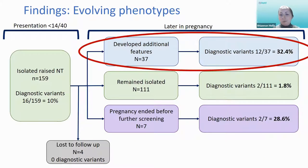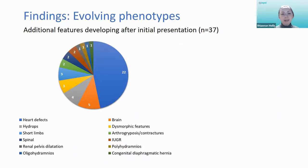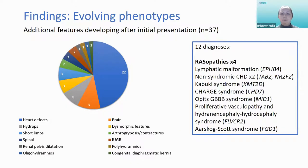Looking at what types of abnormalities developed in the cases where additional features emerged later in pregnancy: cardiac abnormalities were by far the commonest type of additional abnormality to develop, which makes sense given the known association between increased NT and cardiac defects. That was followed by brain abnormalities and hydrops. In terms of diagnoses, the commonest category were rasopathies, which accounted for one third of the diagnoses made in this group. The rest were a mixture of various other syndromic conditions.